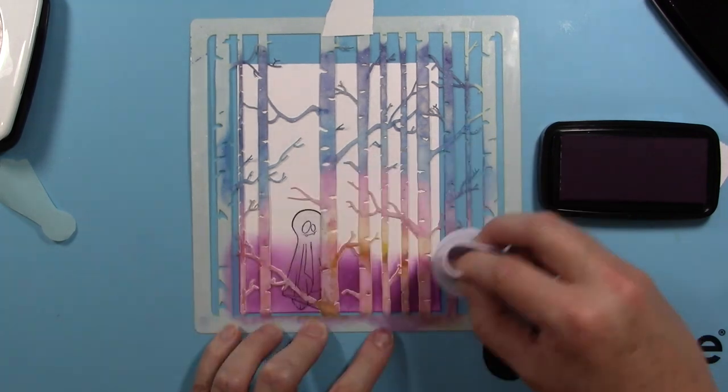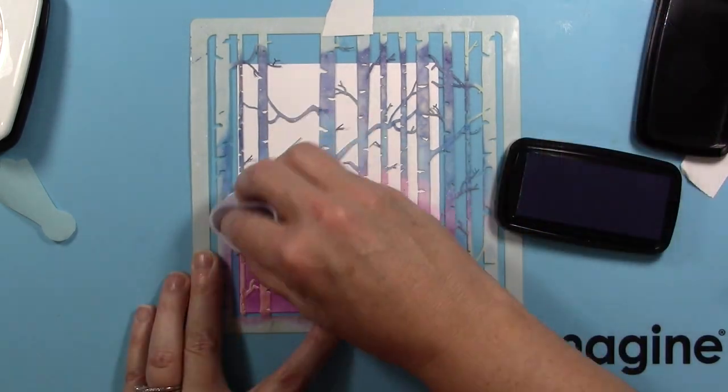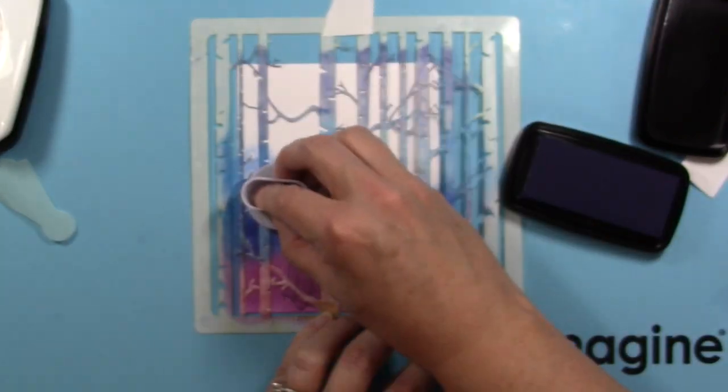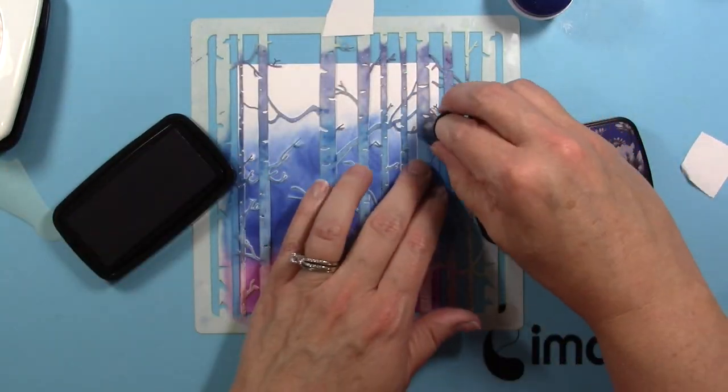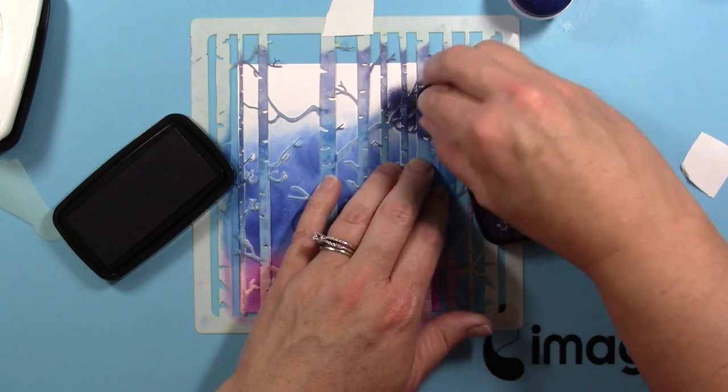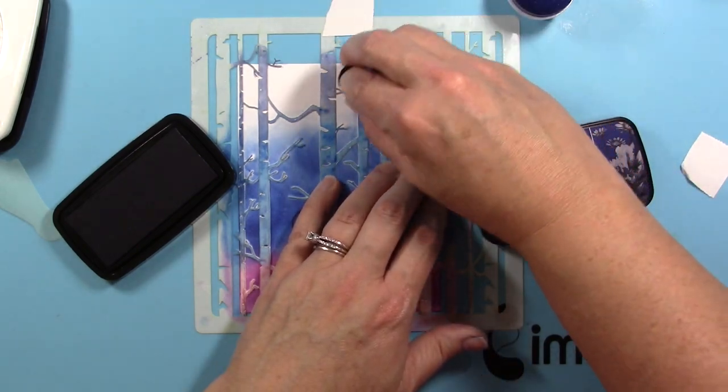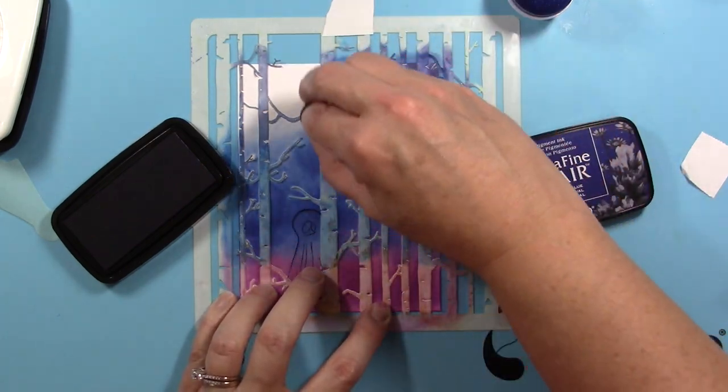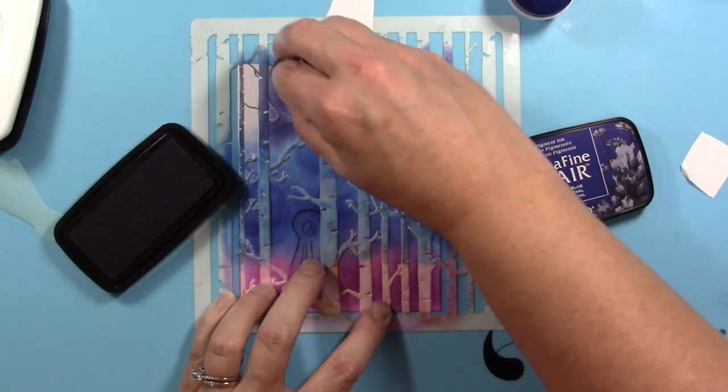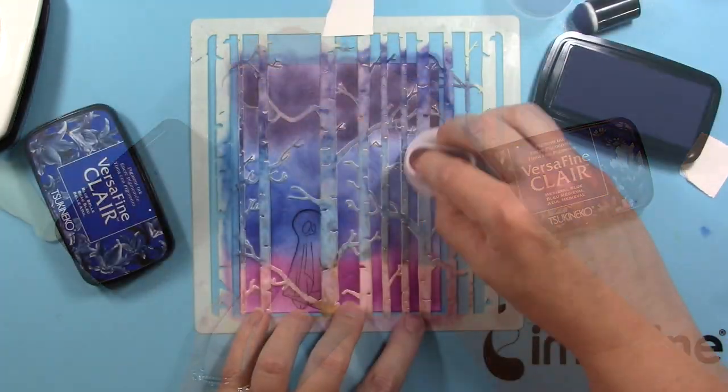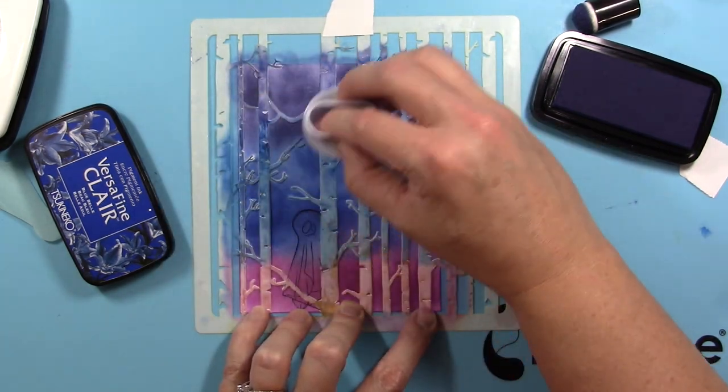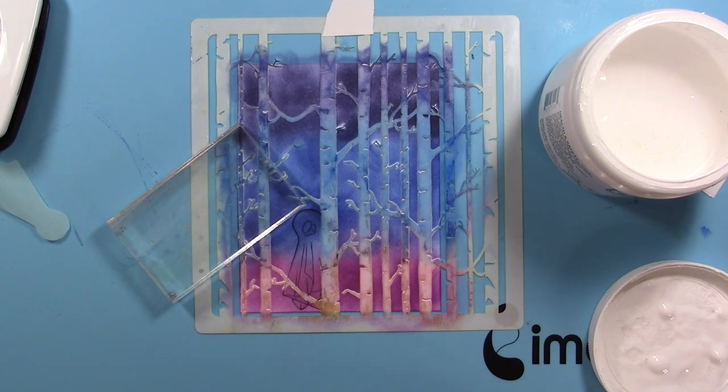I'm taking a large sponge dauber and simply mushing that color right over the stencil. That first color was purple delight Versifying Claire, and now I'm using bluebell Versifying Claire, and finally I will finish with medieval blue Versifying Claire. I switched to a small dauber for the top portion and I'm being careful not to move the stencil where those little fine branches are, then I'm going back with my bluebell and blending that medieval blue back into it as well as the purple delight.